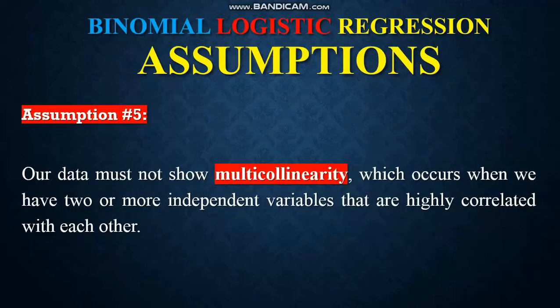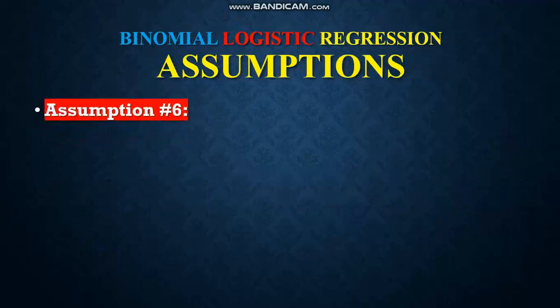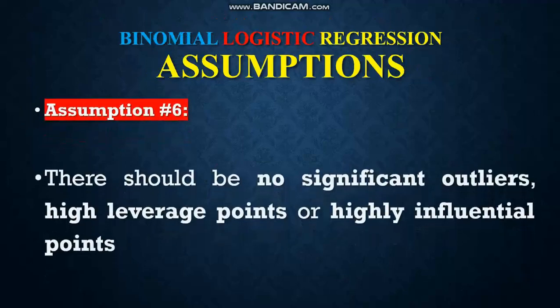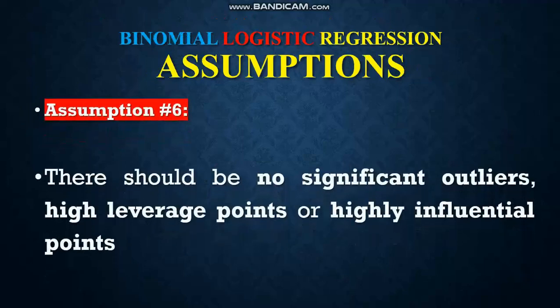The sixth and last assumption is that there should be no significant outliers. High leverage points are highly influential points which represent observations in our dataset that are in some way unusual. These can have a very negative effect on the binomial logistic regression equation that is used to predict the value of the dependent variable based on the independent variables.